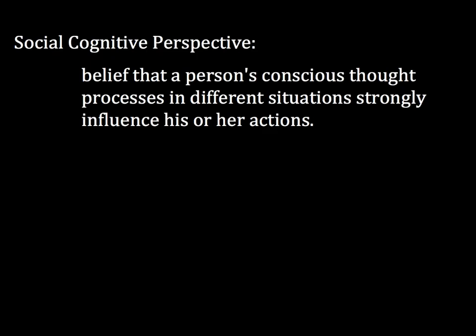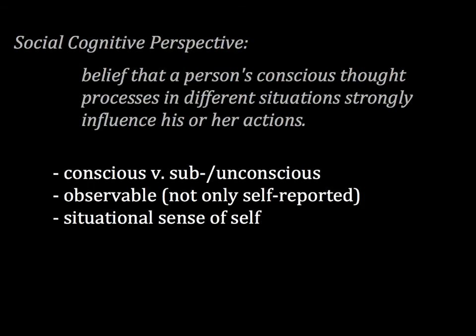Whereas the trait perspective focuses on observed behaviors, the social cognitive perspective is based around the idea that a person's conscious thought processes in different situations strongly influence his or her actions. These theorists believe that since people actively process information from their social experiences, this information influences their goals, expectations, beliefs, and behavior, as well as the specific environments they choose to inhabit. The social cognitive perspective relies heavily on experimental findings, emphasizes conscious self-regulated behavior, and recognizes that a person's sense of self can vary depending on the situation — the situational sense of self.